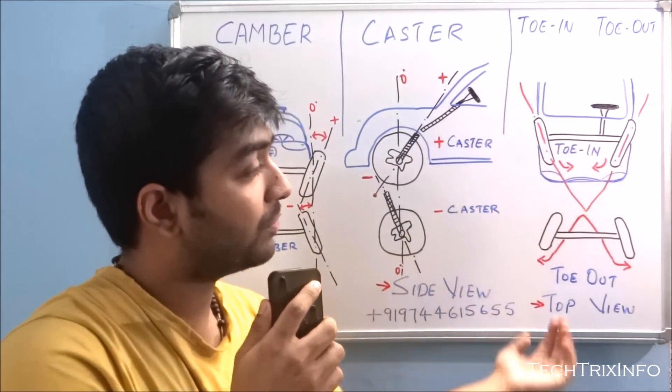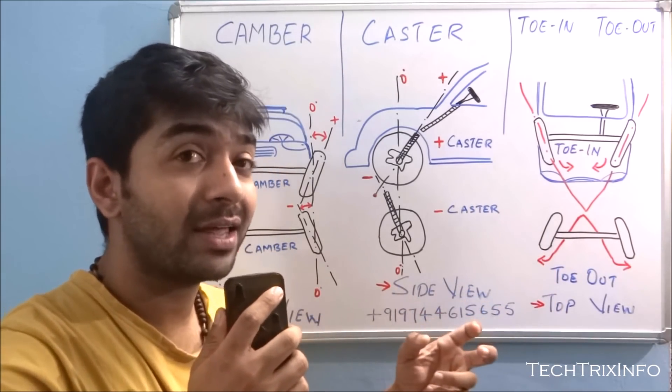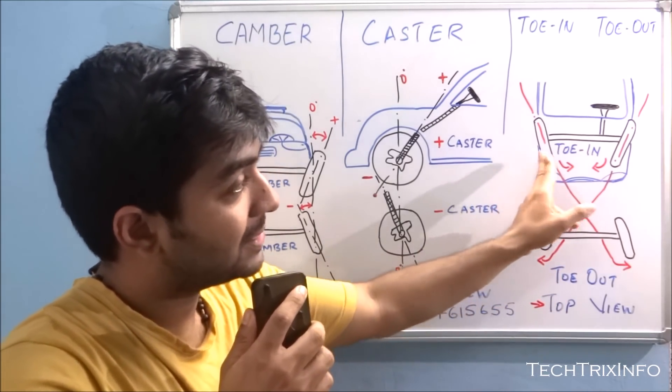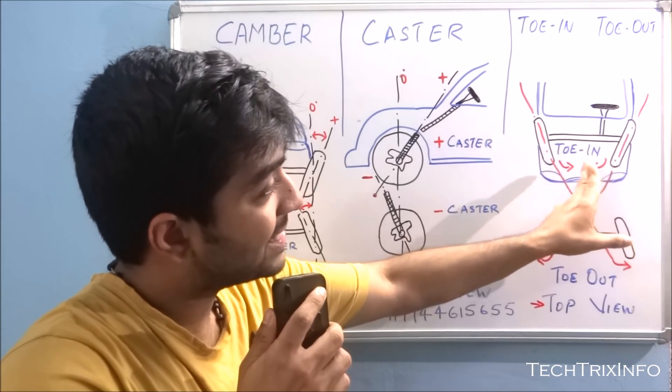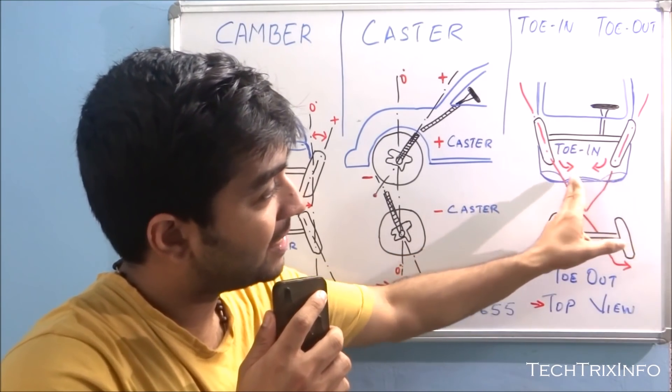It's on the top view or the bottom view of the car. If you look, you can identify the toe-in or toe-out. So you can see this is a drawing. Toe-in is when the front tires are facing each other.